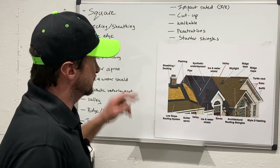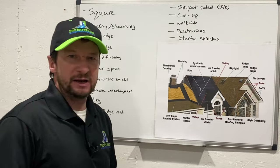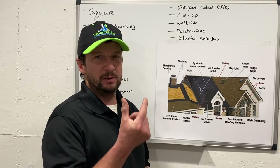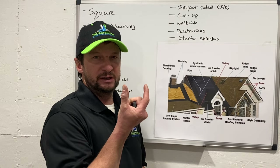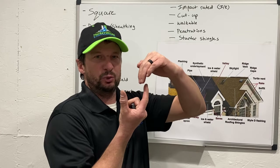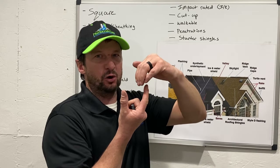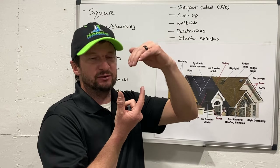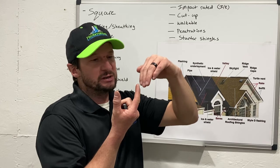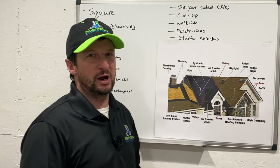The next term is gutter apron, and that goes down on your eave edges. The gutter apron sits over your gutters. When your gutters come up in a U shape against your fascia, the gutter apron comes down and overlaps that. So any water running over the edge of your roof, the gutter apron forces it into the gutter — otherwise it could run behind your gutter and cause leaking, rot, and damage.